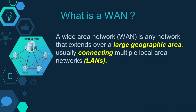What is a WAN? A Wide Area Network or WAN is any network that extends over a large geographical area, usually connecting multiple Local Area Networks. Two important points are that the WAN extends over a large area and it usually connects multiple LANs.